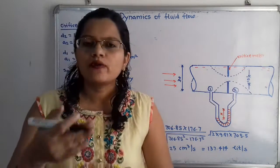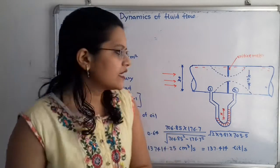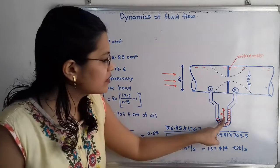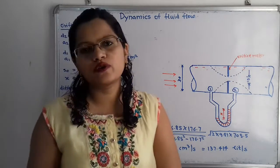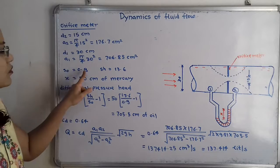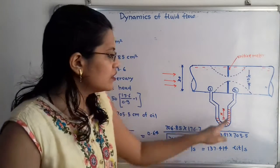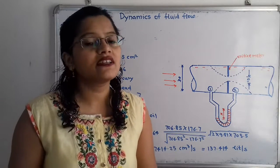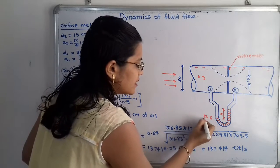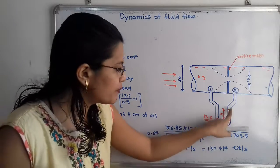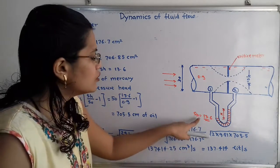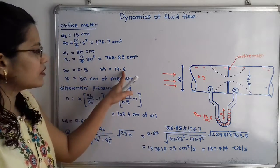For the calculation of rate of flow of oil through this pipe, we first calculate the differential pressure head — that is, the pressure head difference at point one and point two. We have the value of x. The specific gravity of oil is given as 0.9, so we write S_o equal to 0.9. The specific gravity of mercury we know is 13.6. Comparing 0.9 and 13.6, mercury is the heavier liquid in the U-tube manometer, so we denote S_h equal to 13.6.